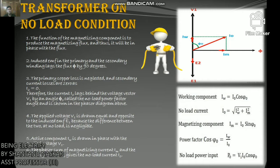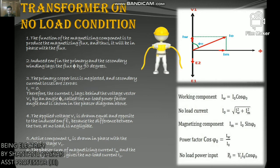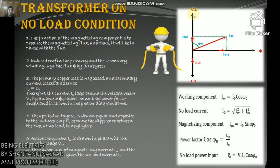The no-load current consists of two components. First is the reactive or magnetizing component Im, which is in quadrature with the applied voltage V1. It produces flux in the core and does not consume any power. Second is the active or power component Iw, also known as working component, which is in phase with the applied voltage V1. It supplies iron losses and a small amount of primary copper losses.